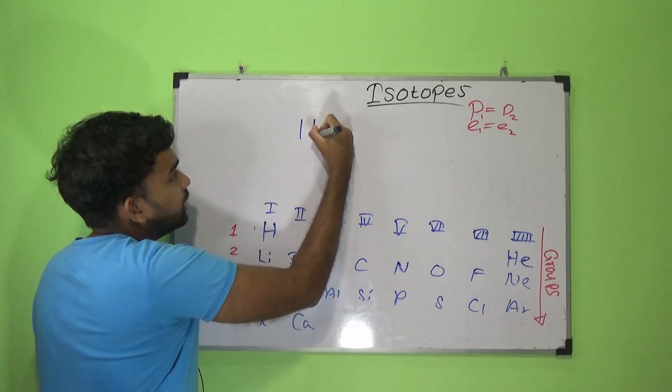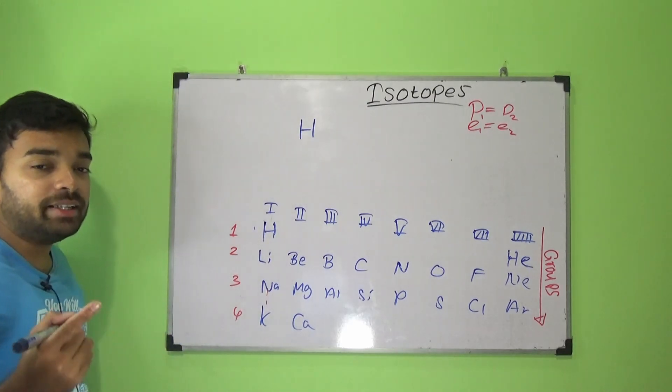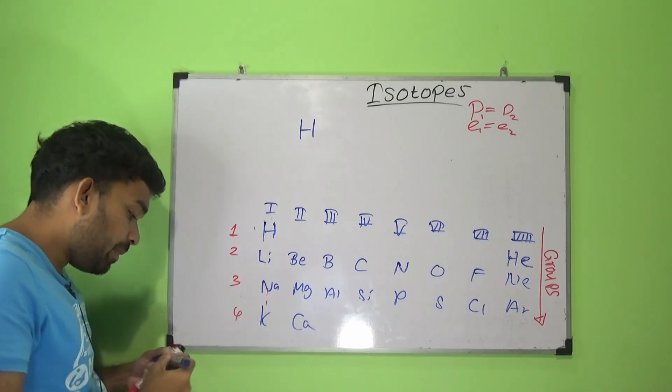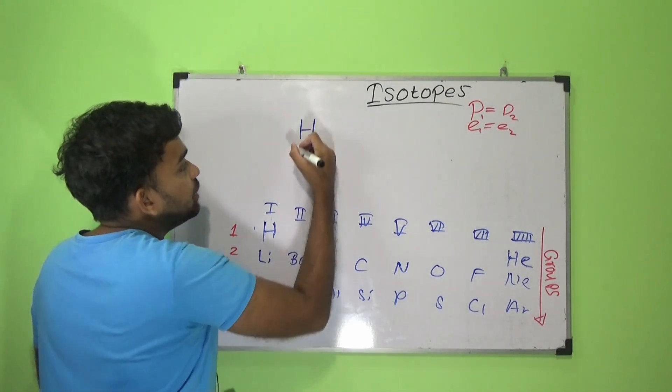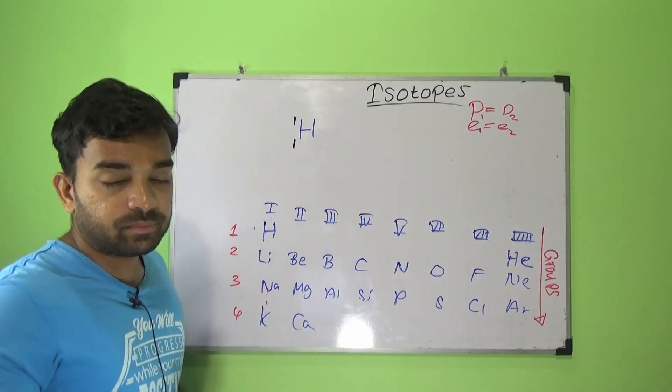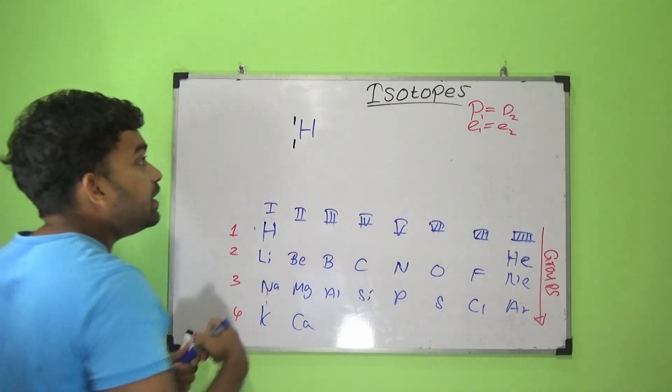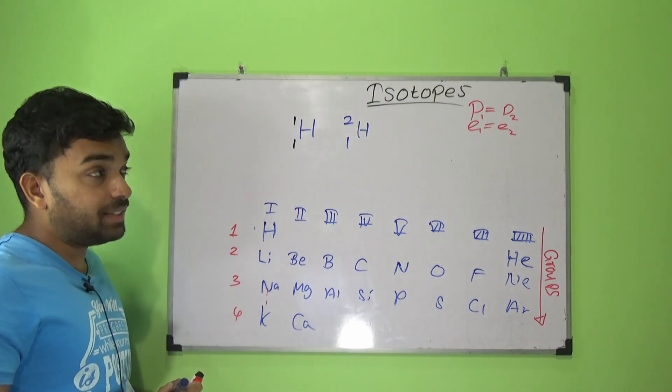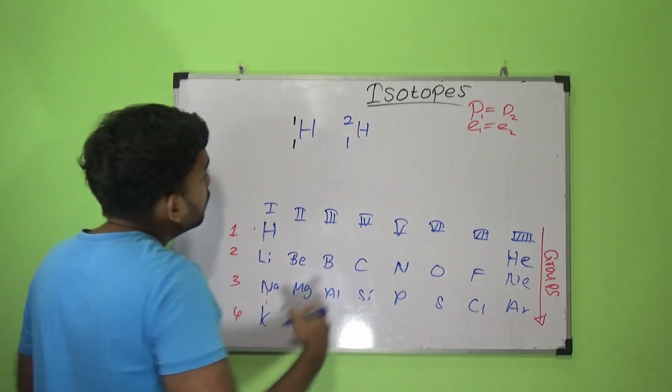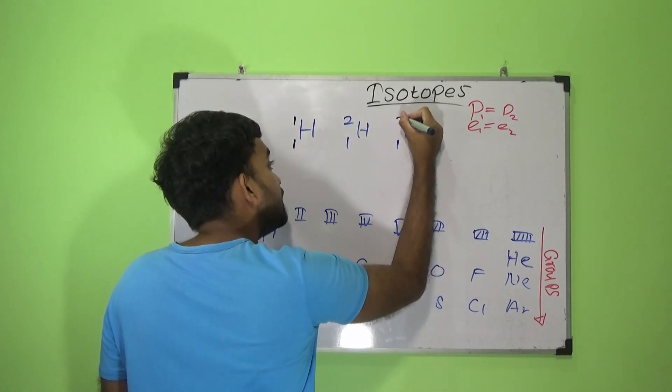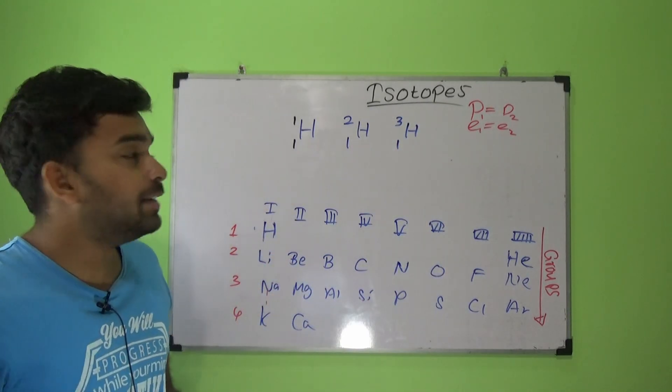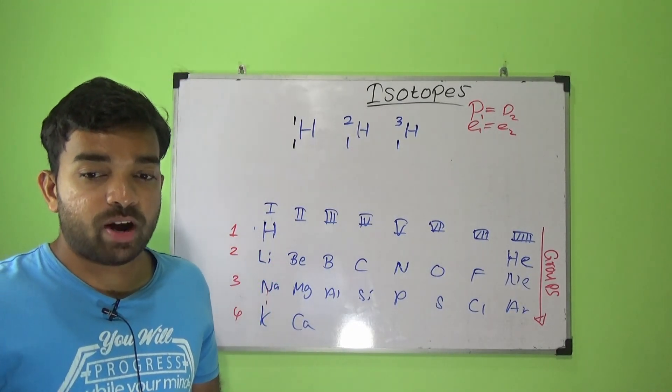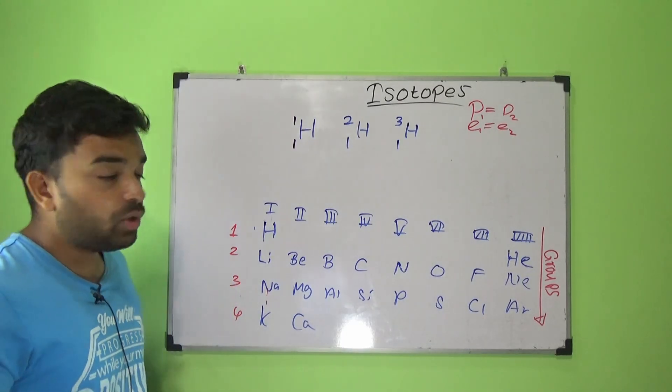Let me take this as an example. Hydrogen, we're going to start with hydrogen. We have three different isotopes of hydrogen. One is hydrogen 1-1, and the other one is hydrogen 1-2. The next one is hydrogen 1-3.